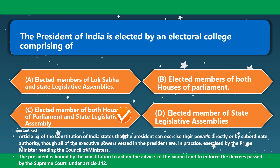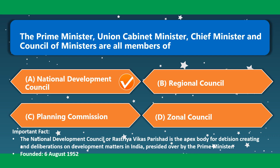The President of India is elected by an electoral college comprising elected members of both Houses of Parliament and State Legislative Assemblies. Article 53 of the Constitution states that the President can exercise their powers directly or through subordinate authority, though all executive powers are in practice exercised by the Prime Minister heading the Council of Ministers. The Prime Minister, Union Cabinet Ministers, Chief Ministers and their Councils of Ministers are all members of the National Development Council — option A is correct.